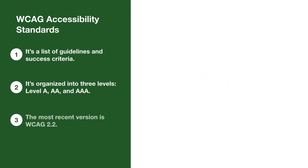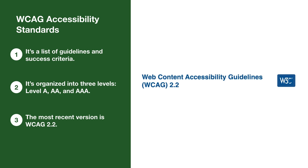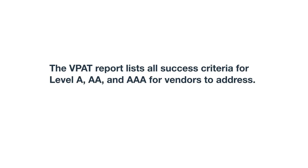As of this video, the most recent version is WCAG 2.2, which has all the most recent guidelines and success criteria. So putting it all together, the VPAT report lists all success criteria for Level A, AA, and AAA for vendors to address. Keep in mind this report is voluntary and created by the vendor, so it's important to do some checking yourself with your own accessibility testing.